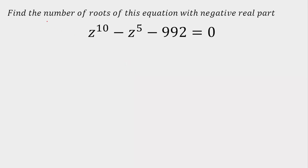In today's class, I am going to solve a question from complex numbers. The question is: find the number of roots of this equation with negative real part. The equation is z raised to the power 10 minus z raised to the power 5 minus 992 is equal to 0.